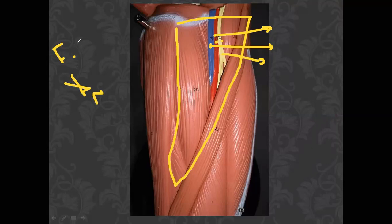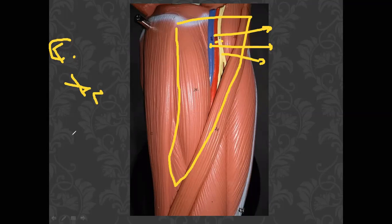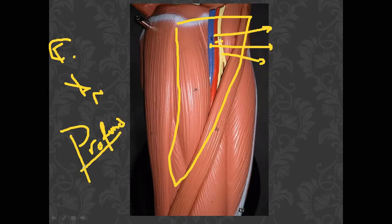The origin of the femoral artery is the external iliac artery. The termination of the femoral artery is the popliteal artery. One important branch of the femoral artery is the profunda femoris artery — don't forget the profunda femoris, similar to the profunda of the brachial artery in the upper limb.